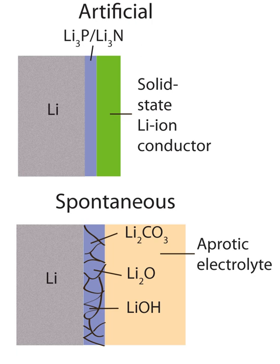At the cathode during charge, oxygen donates electrons to the lithium via reduction. Mesoporous carbon has been used as a cathode substrate with metal catalysts that enhance reduction kinetics and increase the cathode's specific capacity.